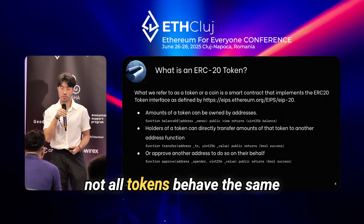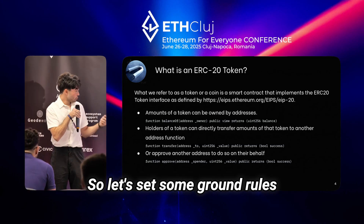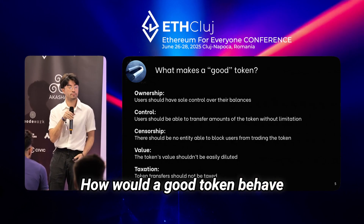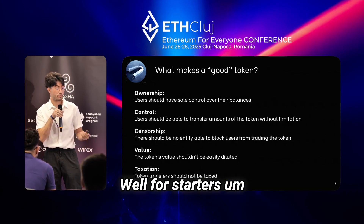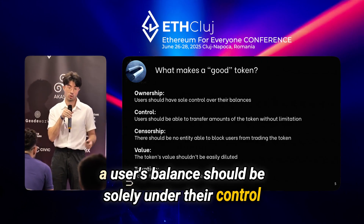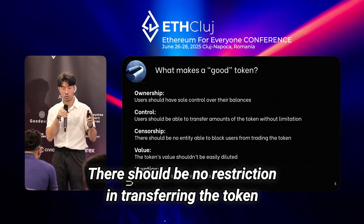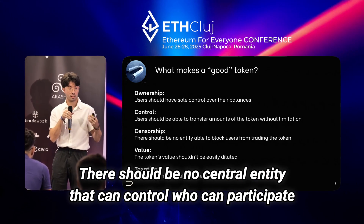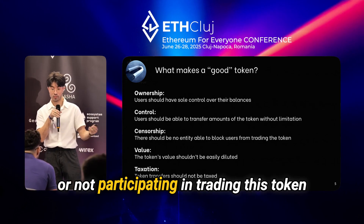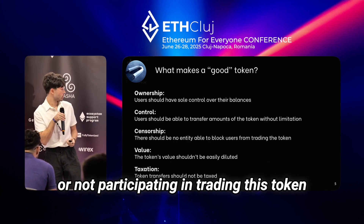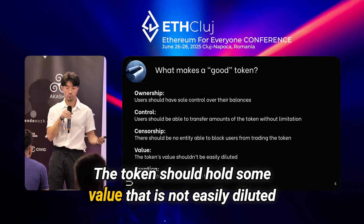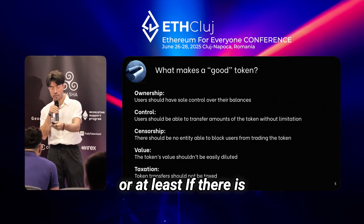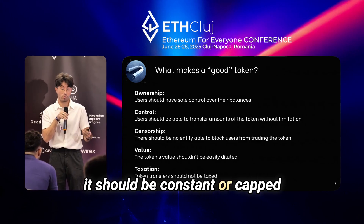Not all tokens behave the same, so let's set some ground rules for how a good token should behave. A user's balance should be solely under their control. There should be no restriction in transferring the token and no central entity that can control who can participate in trading. The token should hold some value that is not easily diluted, and finally there should be no tax on transfer, or at least if there is, it should be constant or capped.